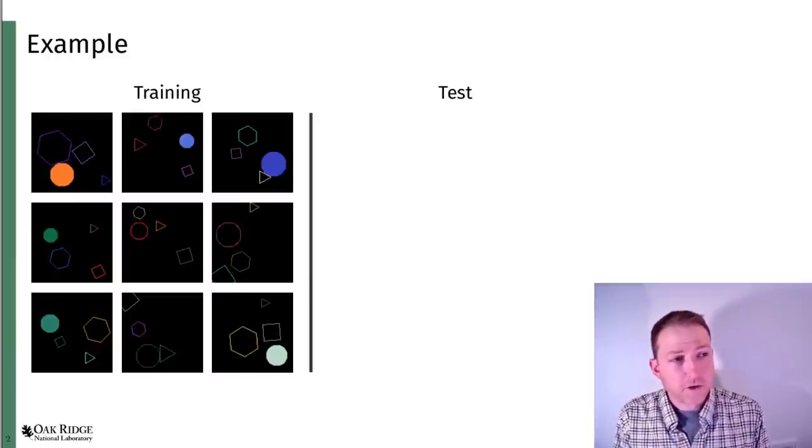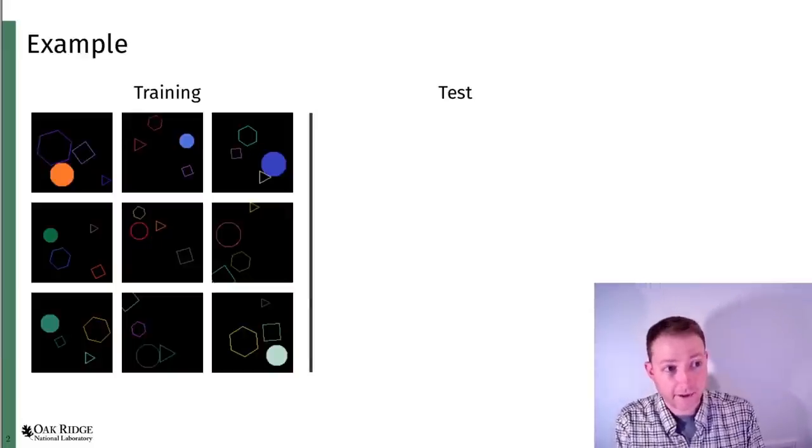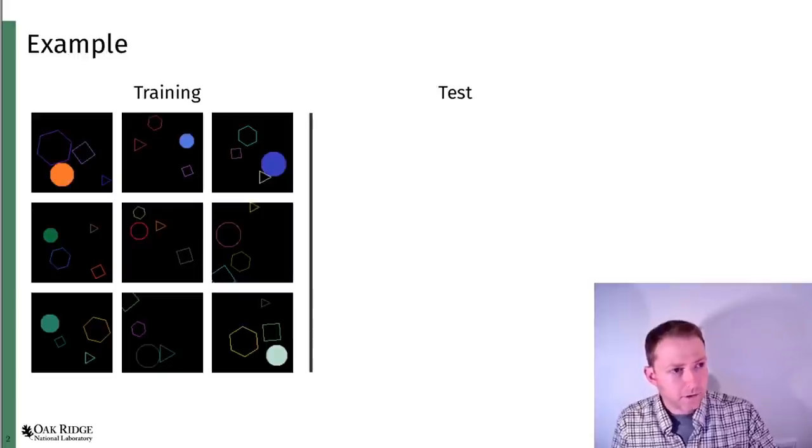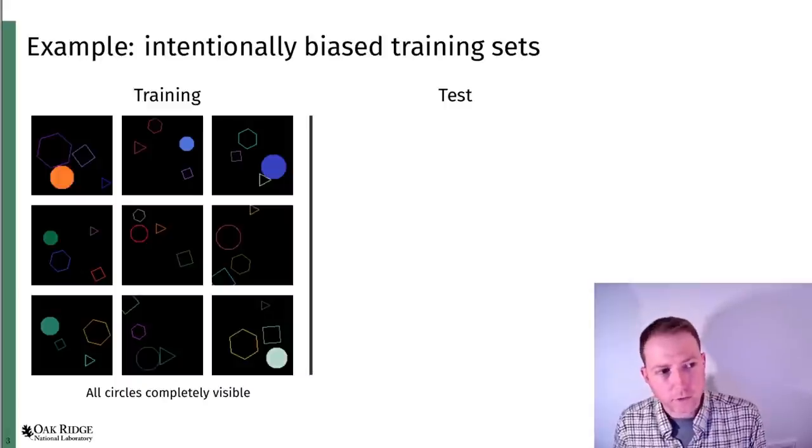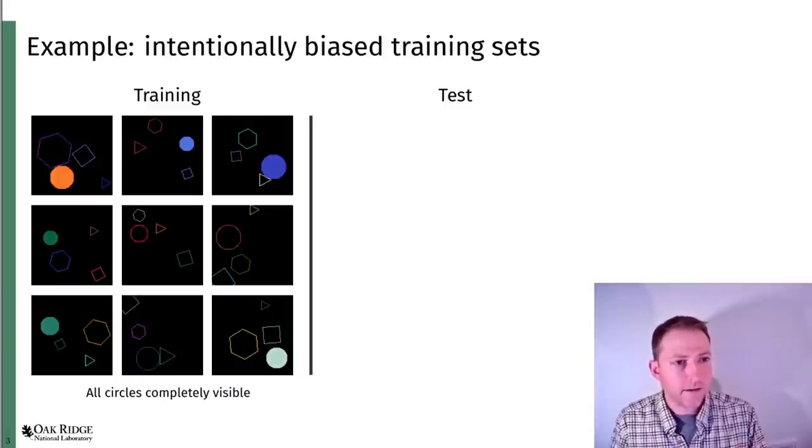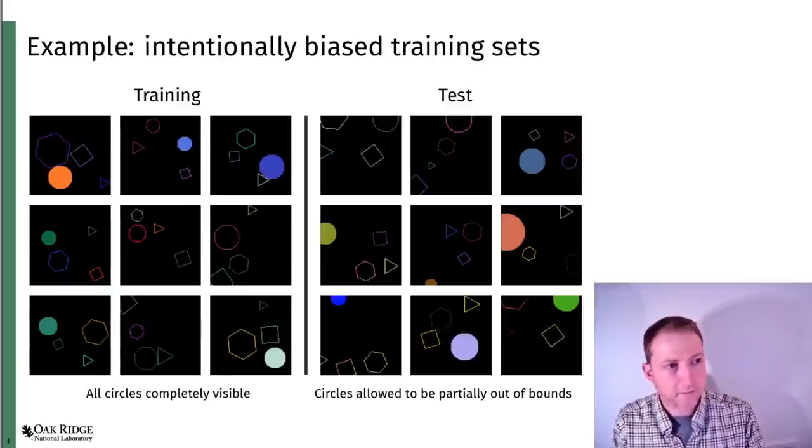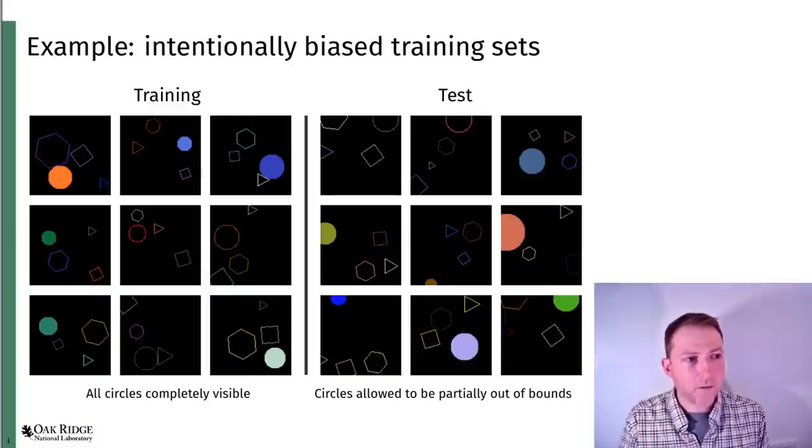To explain some of the motivation that led to writing Lattice to begin with, here's an example training set that I used Lattice to generate. I forced there to be a problem in this dataset, which is that every object is free to fall partially off the edge of the image, except for circles. Circles are always completely visible in the training set. If you train a neural network or some other machine learning model to do a task on this dataset, and then apply that model to a test set where the same constraints for circles don't hold, then that model is going to have trouble generalizing.